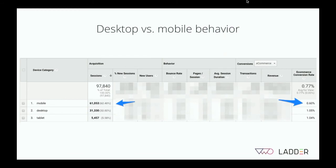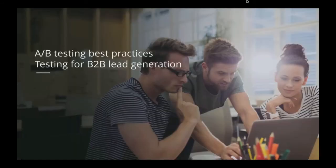Desktop versus mobile: here's a screenshot showing how performance can be very different across platforms. We at Ladder try to consider the two funnels a bit separately. For instance, if you have two thirds of your traffic on mobile with a 0.6% conversion rate versus a third on computers converting much better, you're probably going to want to begin running tests on the mobile site first since you have so much volume there that isn't converting.